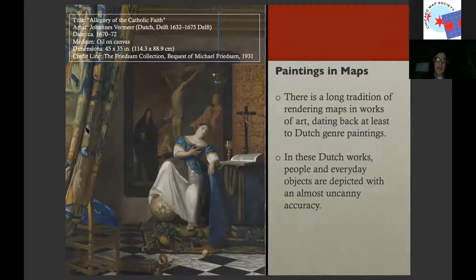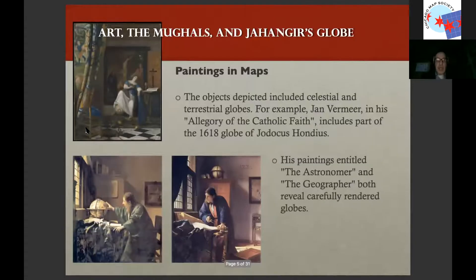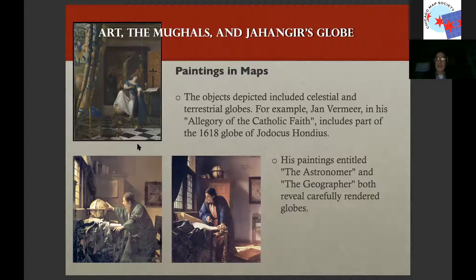In these Dutch works it was very common to portray everyday objects and people very realistically, very accurately — and even things like globes. The Dutch had their own empire and traded all over the world, so it's not surprising that painters became interested in geography. We see some wonderful examples here. Vermeer painted globes in several of his works. There's a work entitled Allegory of the Catholic Faith that includes not just a globe but an actual existing globe — the 1618 globe of Hondius. Then we see two other paintings, one called the Astronomer and one called the Geographer, where globes are depicted very clearly in studio settings.